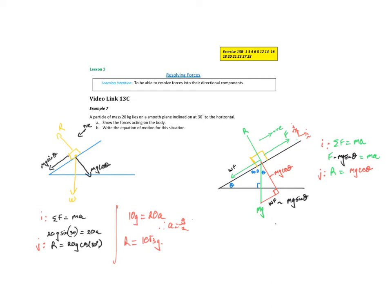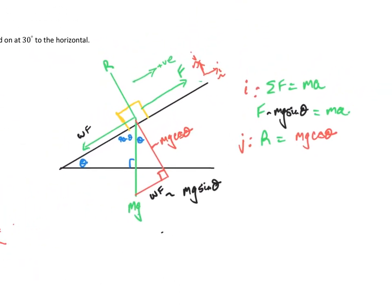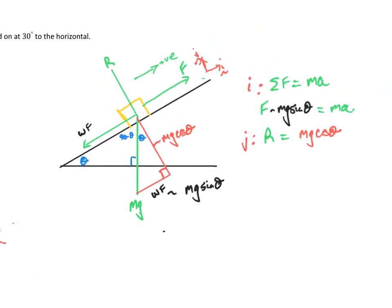Let's have a look at resolving our forces if our particle is on an inclined plane. If we just come across and have a look at our general scenario over here on the right. In this instance, we might have a pulling force or a pushing force up the plane, which is our force up the plane here. We've got our weight force, which acts with gravity, so vertically down, mg. We've got the reaction force, which acts perpendicular to the plane, R.